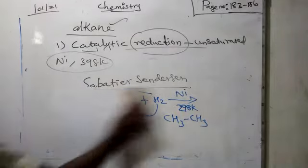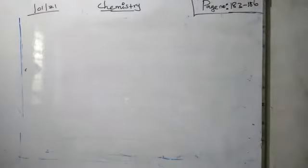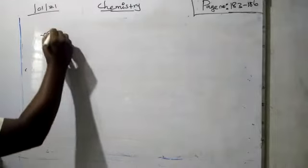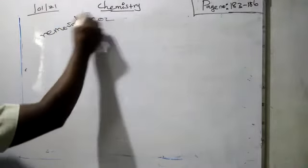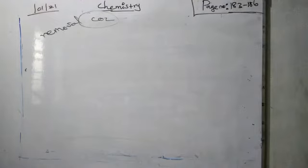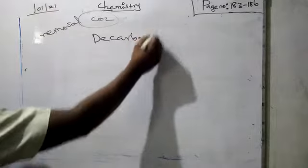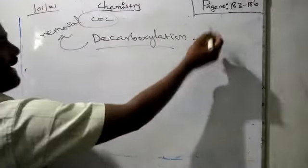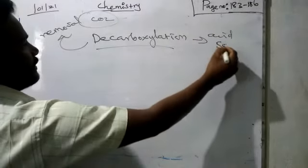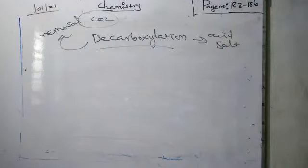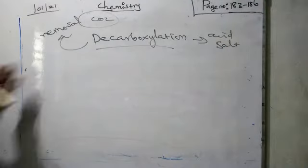The next preparation is decarboxylation. Decarboxylation means removal of the carboxylic group — that is, removal of CO₂ from an acid salt. Here we use the sodium salt of a carboxylic acid. The condition required is soda lime. Soda lime means sodium hydroxide (NaOH) combined with calcium oxide (CaO). In the presence of soda lime, the decarboxylation reaction takes place.